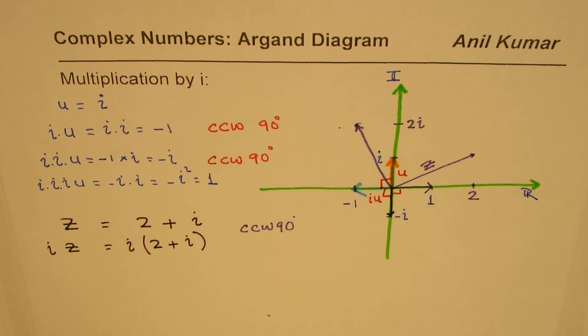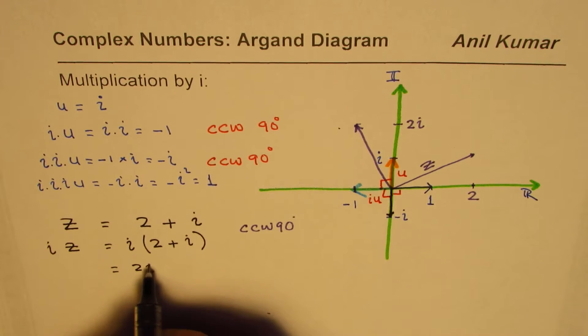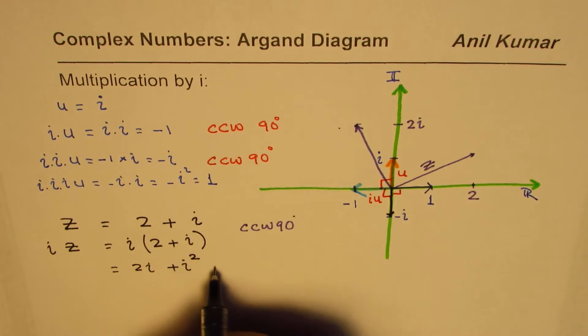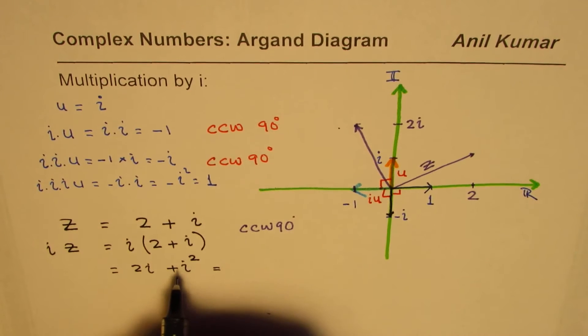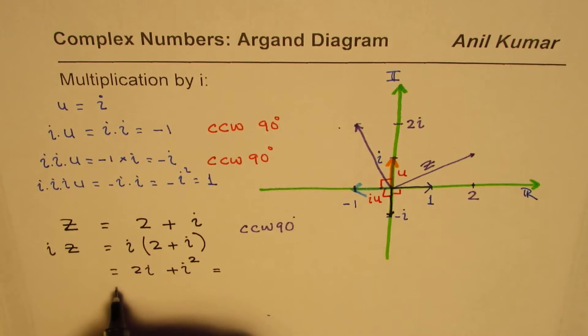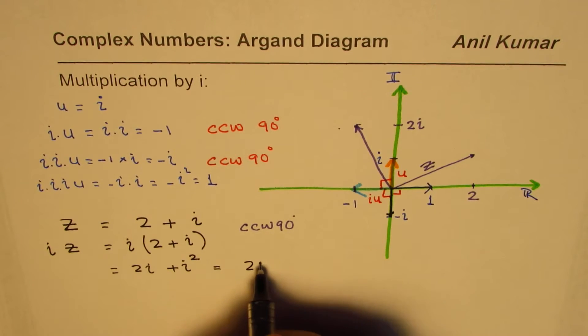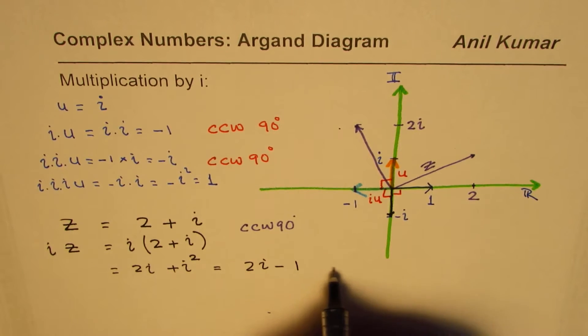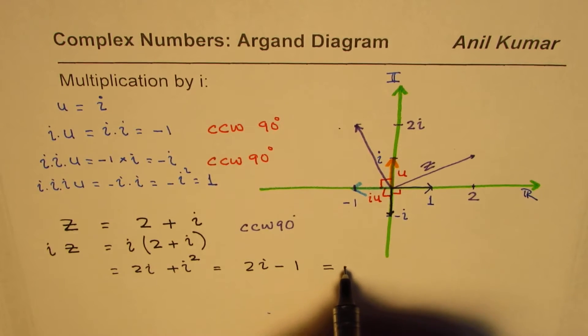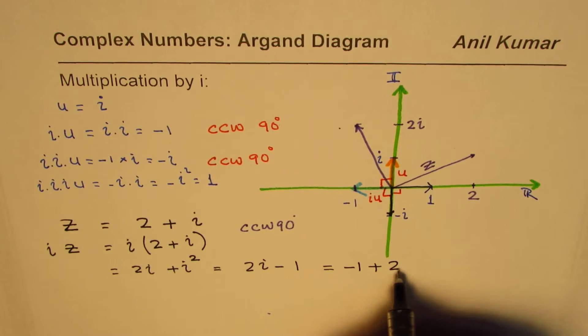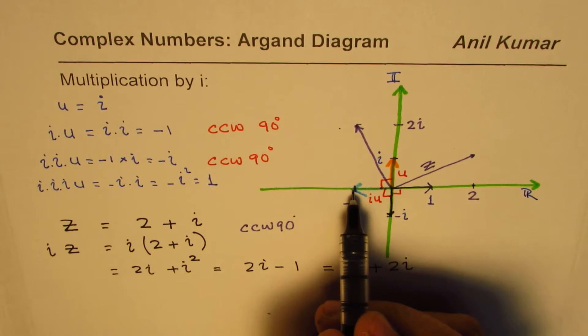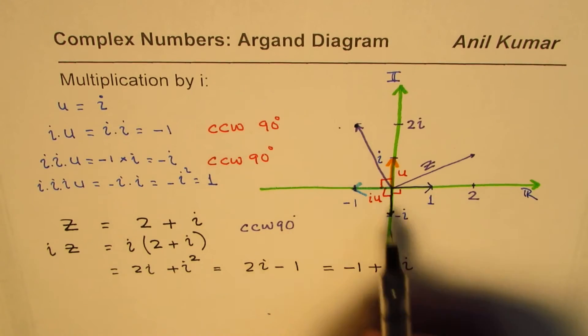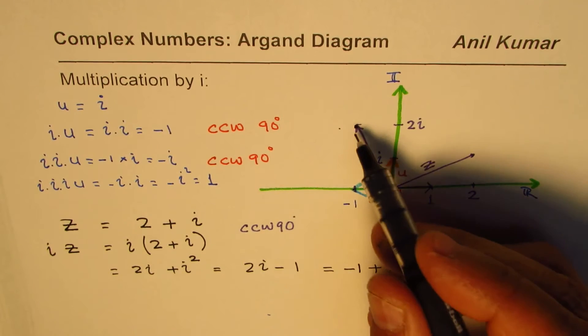Let us expand this, see what happens. We get 2i plus i squared, and that means i squared is minus 1. So what we get here is 2i minus 1, and rearranging, we get minus 1 plus 2i. So minus 1 plus 2i is just that complex number which we are looking for.